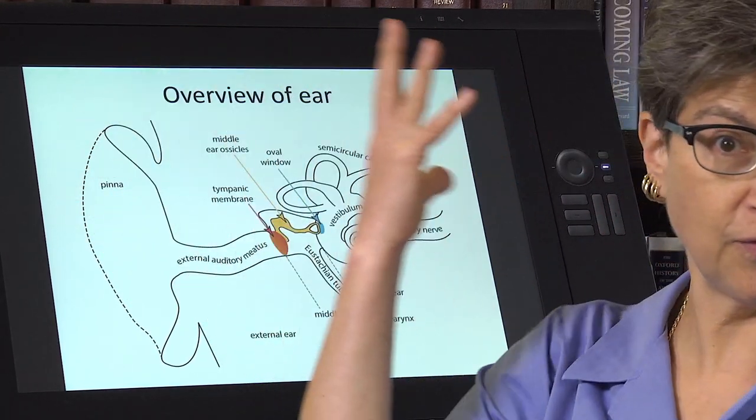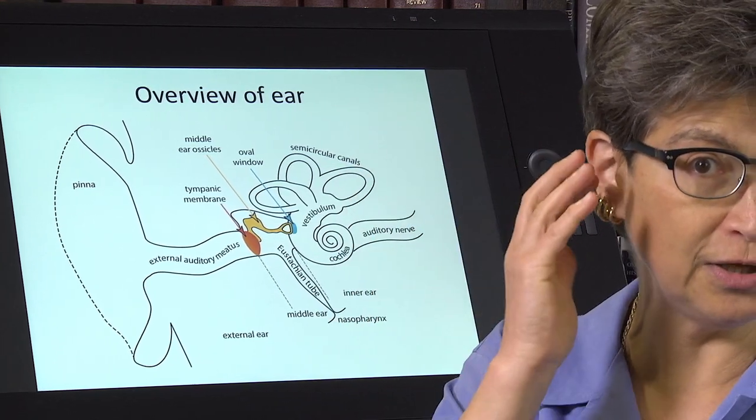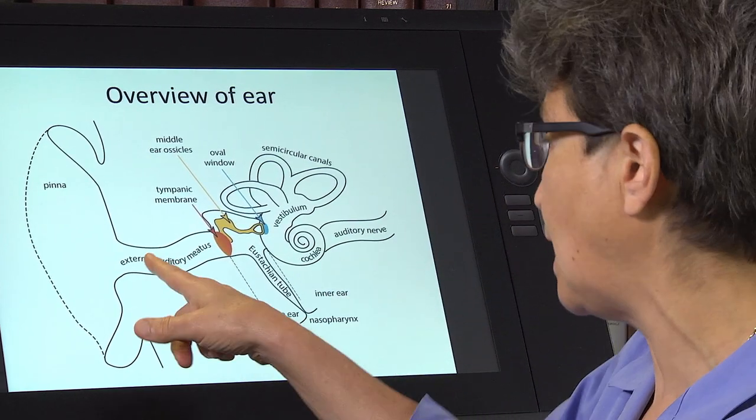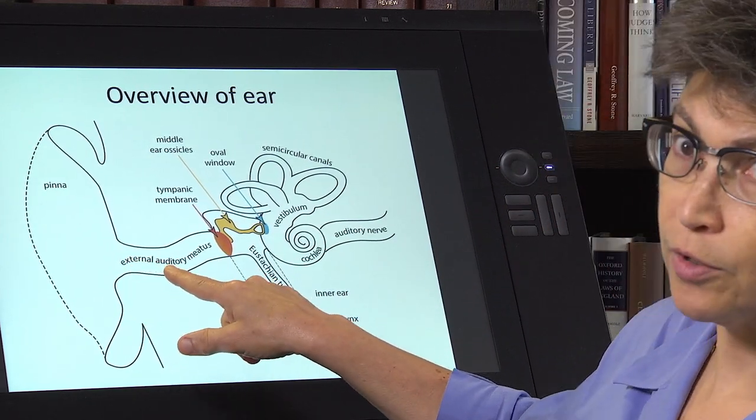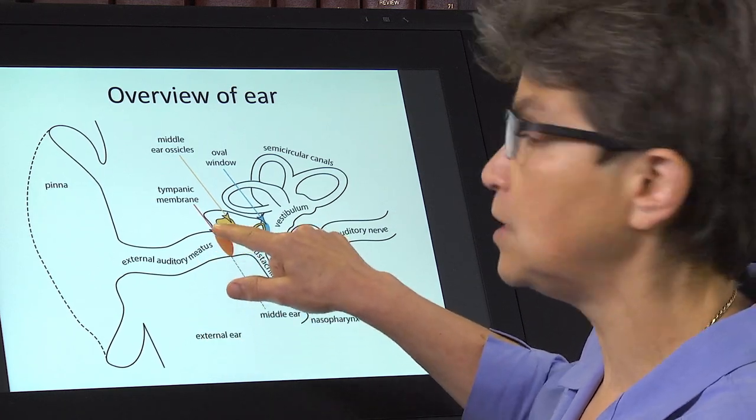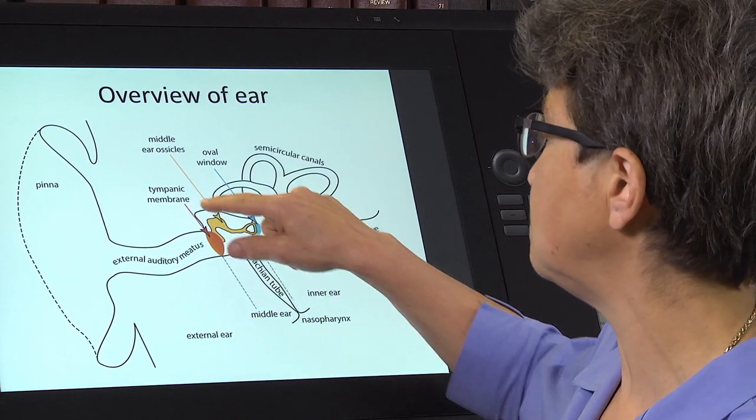The external ear is from the outside, it starts with the pinna, which is going to help funnel in changes in air pressure through the ear canal, or more formally, the external auditory meatus, all the way to the eardrum, or again, the tympanic membrane.